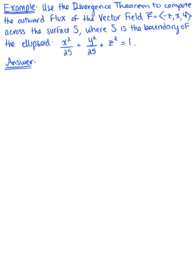Use the divergence theorem to compute the outward flux of the vector field F = <-z, x, 4> across the surface S, where S is the boundary of the ellipsoid x²/25 + y²/25 + z² = 1.